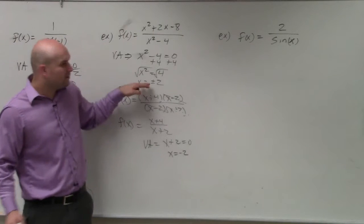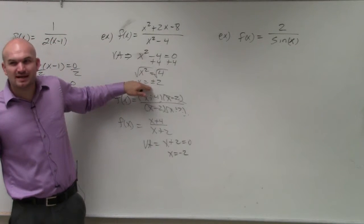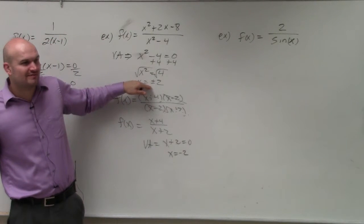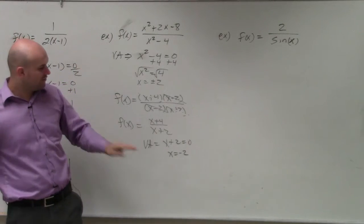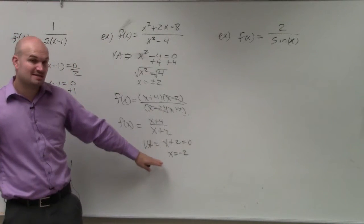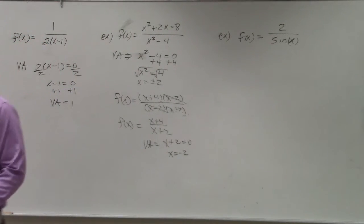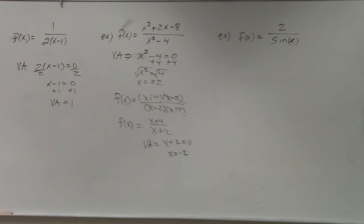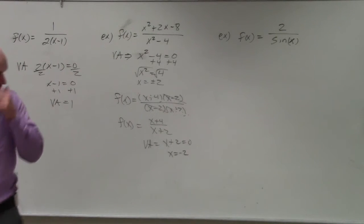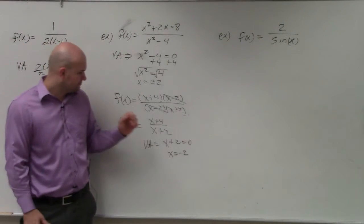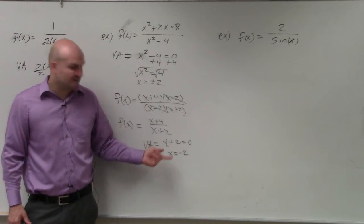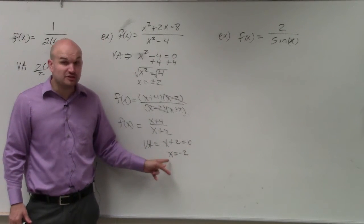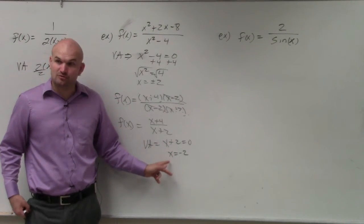So what is the x plus two factor then? What does that occur as in our graph? That's going to be a hole. So our only vertical asymptote is x equals negative two. Be careful with that. For notation, just make sure you write x equals negative two.